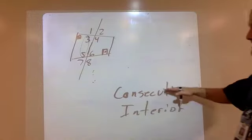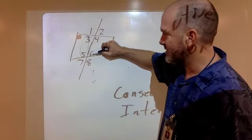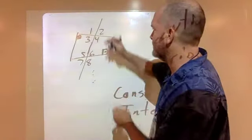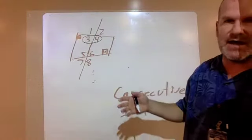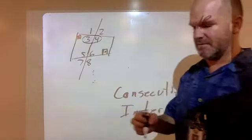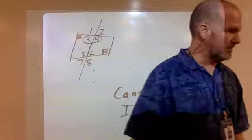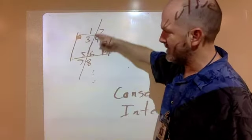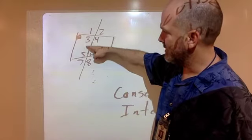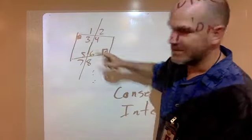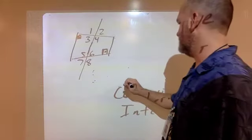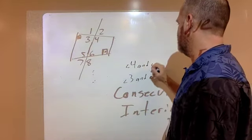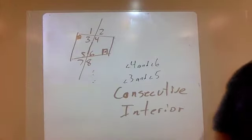You just have to remember that consecutive interior means they're not diagonal from each other — they're right in a row, on the same side of the house. Angles 3 and 4 are next to each other but on different sides, so they'd be alternate, not consecutive. As you travel down the transversal, you get angle 3 and then angle 5, or angle 4 on the right and then angle 6. So the two correct pairs are angle 3 and angle 5, and angle 4 and angle 6 — those are your consecutive interior angles.